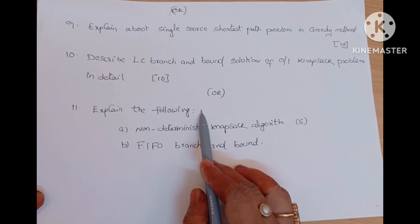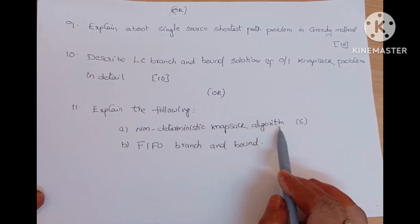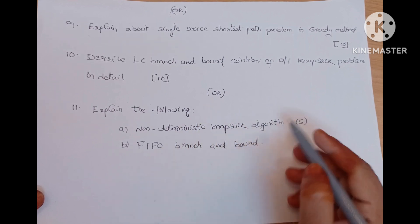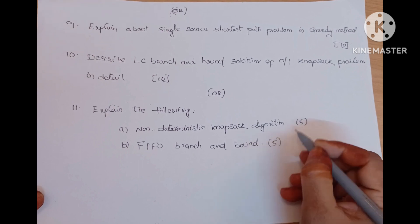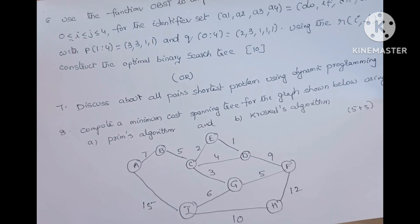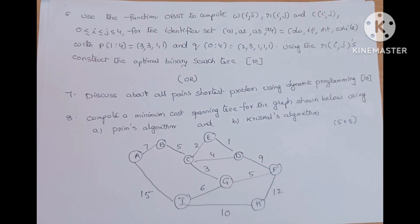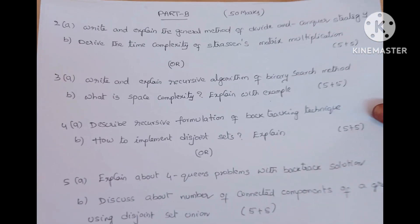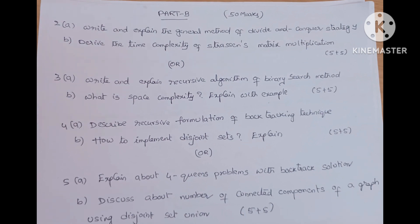Or explain the following: non-deterministic knapsack algorithm, FIFO branch and bound algorithm. 5 plus 5, 10 marks questions. This is the latest question paper from JNTUH DAA. Read this question paper because so many questions are general questions. Again, these questions are repeated for this exam also, chances are there.